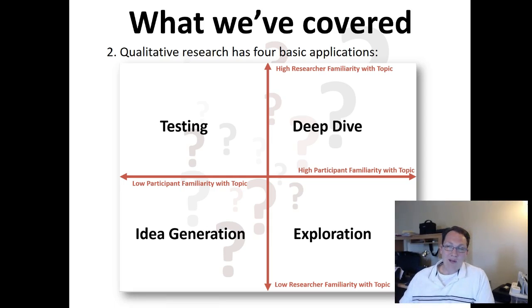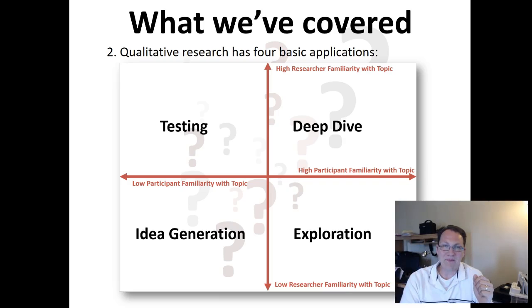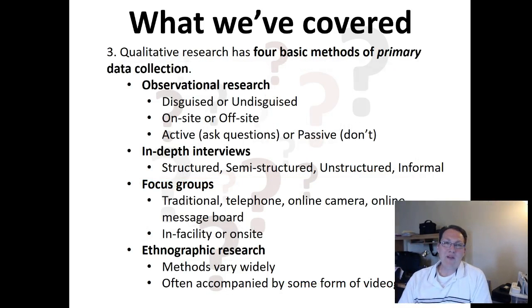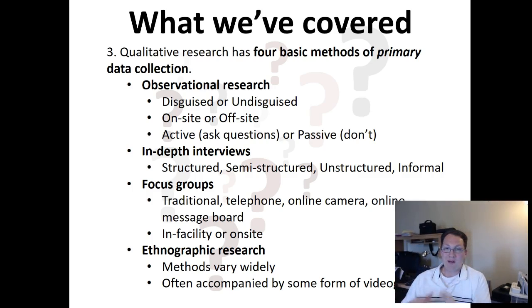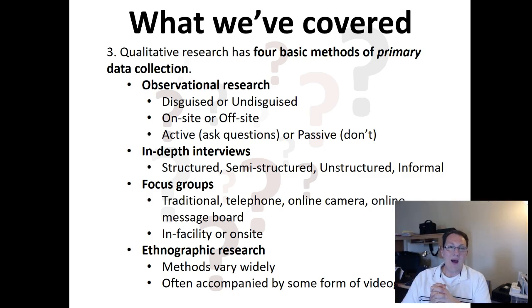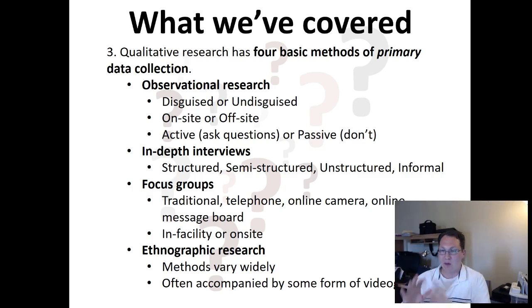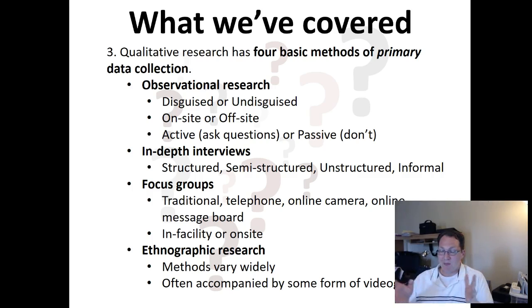While qualitative research can be used for other things, studies generally revolve around one of those four areas. Qualitative research also has four basic methods of primary data collection: observational research, in-depth interviews, focus groups, and ethnographic research. Observational research comes in disguised or undisguised formats; it can be on-site or off-site, and active — where you ask questions — or passive, where you just observe without asking any questions.